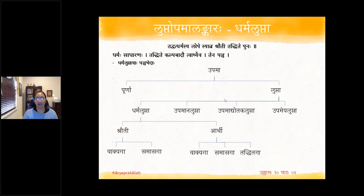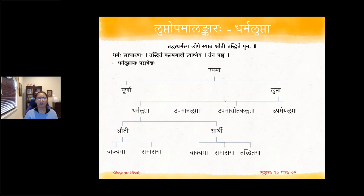The definition states: Tadvath Dharmasya Lope Syat. So you have Upamana, Upameya, Sadharana Dharma, and then Upama Dhyotaka Shabda. First he deals with Dharma Lupta, next he will deal with Upamana Lupta, then Upama Dhyotaka Lupta, then Upameya Lupta. Dharma Lupta means the commonality between two objects is not mentioned. For example, Chandraiva Mukham — he says this alone without mentioning the common quality.